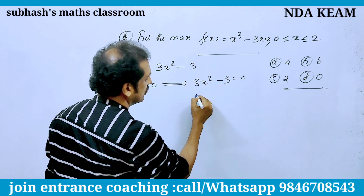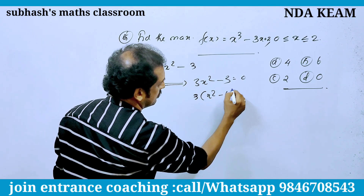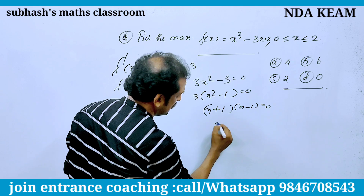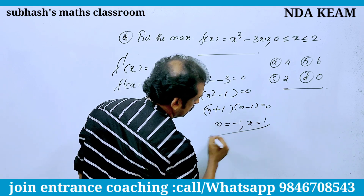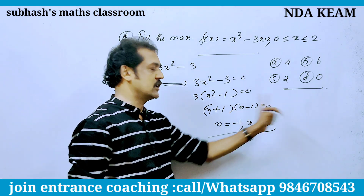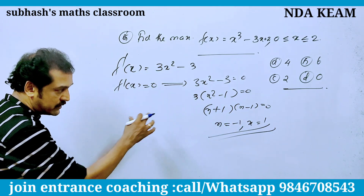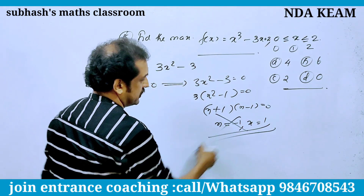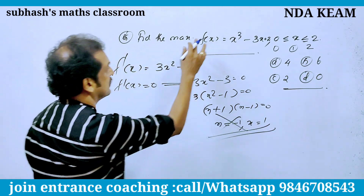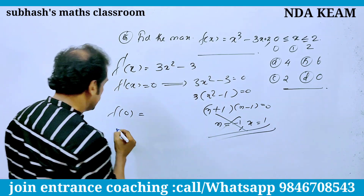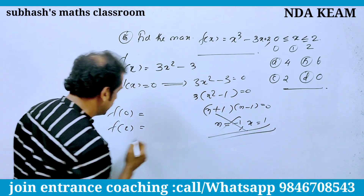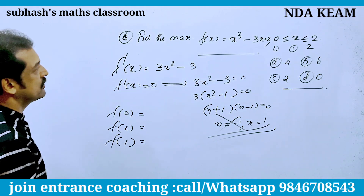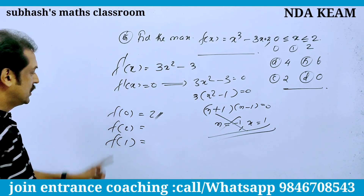3x² − 3 = 0, so x² = 1, giving (x − 1)(x + 1) = 0, so x = 1 and x = −1. Since −1 is outside [0, 2], the critical point inside the interval is x = 1. We evaluate f(0), f(1), and f(2). f(1) = 1 − 3 + 2 = 0.